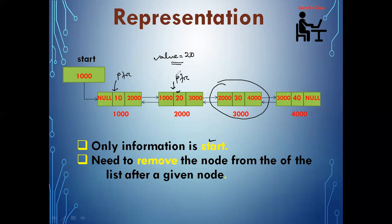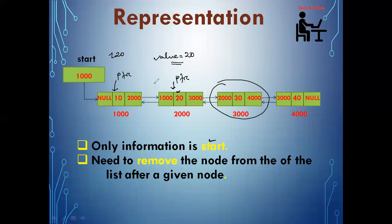ptr will search which node's info is equivalent to the value. Whenever ptr reaches the matching node, it checks if ptr info is equal to value and stops there. The searching process will stop in two cases: either I'll get the node after which I want to delete, or I'll not get the node because it is not present. If the value searched is 120 and no node matches, ptr will keep going to the next node until ptr becomes null.